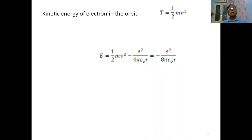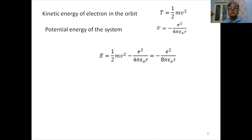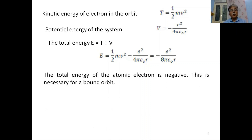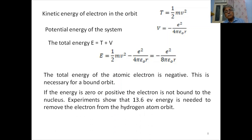From this equation, the electron velocity v is related to the orbit radius r by: v = e / √(4πε₀mr). The kinetic energy of the electron in the orbit is T = ½mv². The potential energy of the system is −e²/(4πε₀r). So the total energy is ½mv² − e²/(4πε₀r). Substituting the expression for v, the total energy comes out to be −e²/(8πε₀r). The total energy of the atomic electron is negative, meaning it is a bound orbit. If energy becomes zero or positive, the electron is no longer bound to the nucleus.